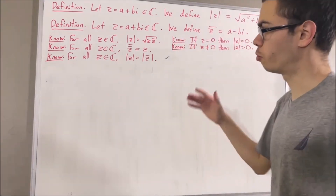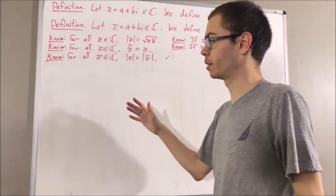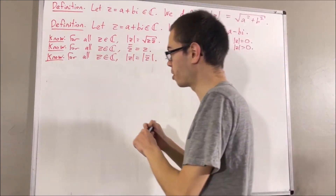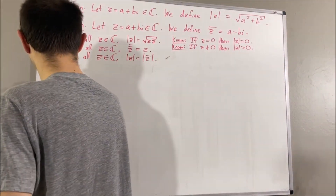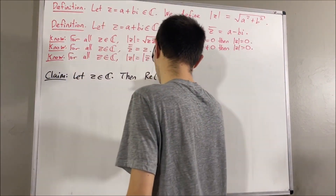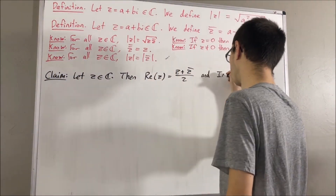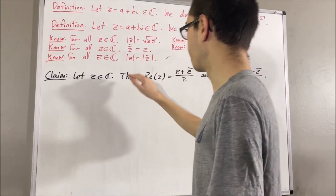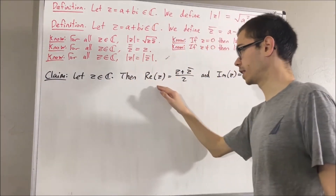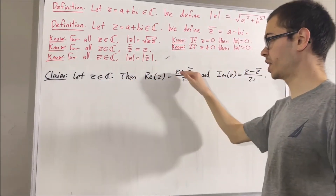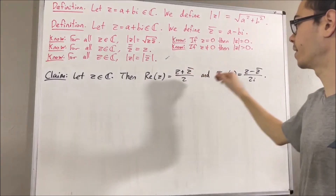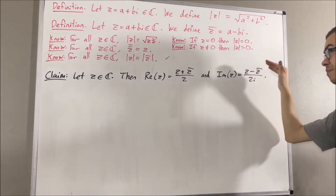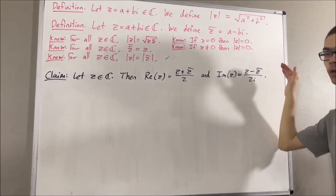Next, we're going to prove facts regarding the real part and imaginary part of a complex number. Let z be a complex number. Then the real part of z is equal to z plus z bar over 2, and the imaginary part of z is equal to z minus z bar over 2i.